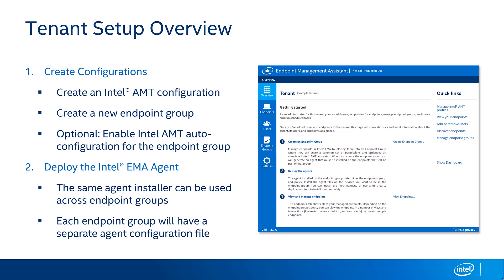Let's start out with talking about the tenant setup process. There are a couple of things you need to do to get yourself going. The first is you need to create some configurations for AMT if you want to use out-of-band management, as well as for creating new endpoint groups to manage your devices. We'll talk about optional enablement of AMT auto configuration, and once you've got your configuration profiles built, it's time to deploy them using the Intel Emma agent so you can start managing your devices.